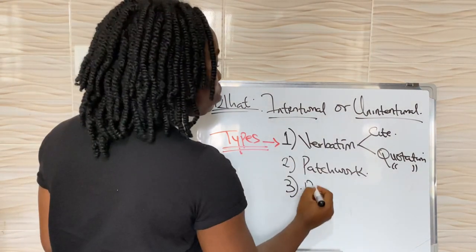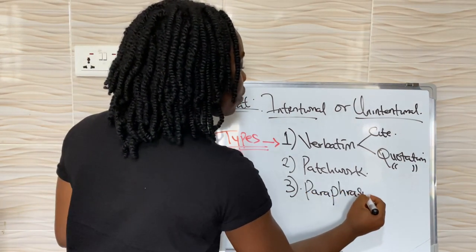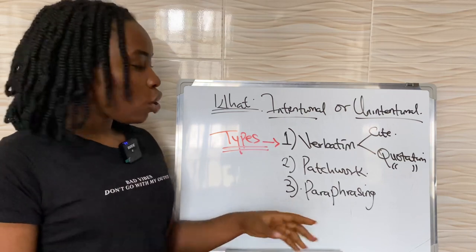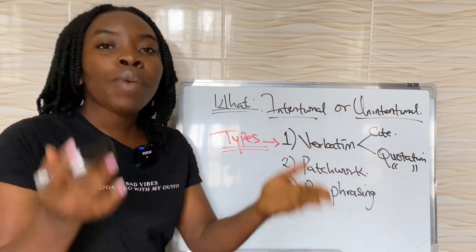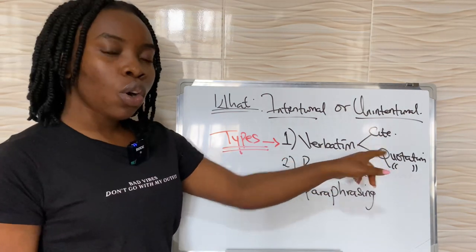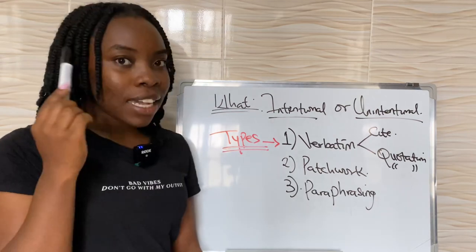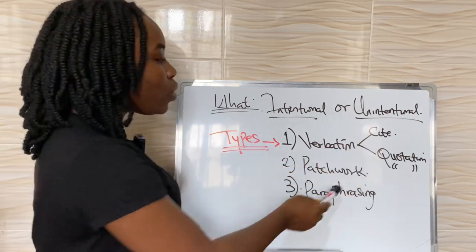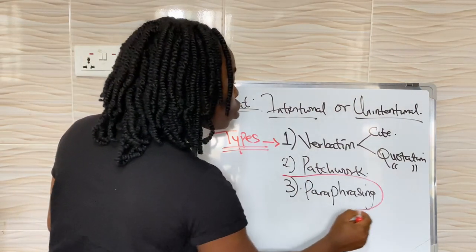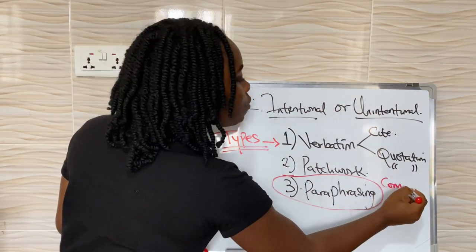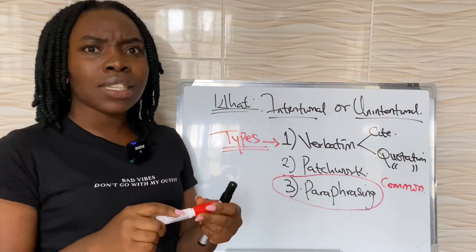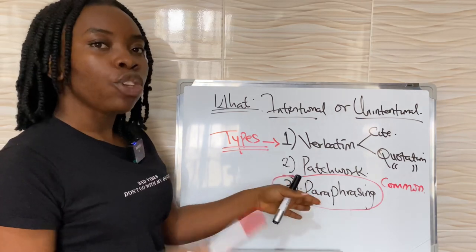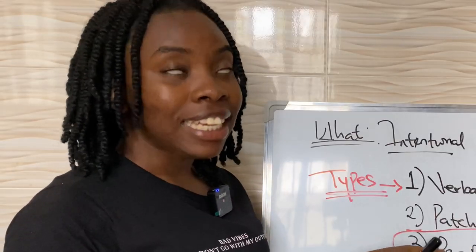The third type, which is actually the most common, is paraphrasing plagiarism. You may wonder how paraphrasing counts as plagiarism — it does. If you read something and write it in your own words but still fail to cite the author, it counts as plagiarism because that idea was originally not yours. It doesn't matter if you wrote it in your own words; you need to still cite the person. This is very common because people think: 'I wrote it in my own words, why is it still ranking as plagiarism?' But if the idea was not originally yours, you must cite where you got it from.